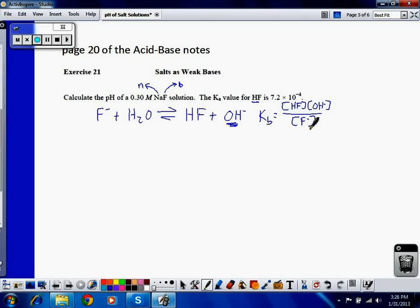I don't have a Kb value, and I want to calculate a pH, which is equilibrium concentration of hydronium ion. So I need to use this Ka value to generate the Kb value, since I know that 1 times 10 to the negative 14th equals Ka times Kb. In this case, Kb would be equal to 1.4 times 10 to the negative 11th. So that's the value I'm going to use for Kb.